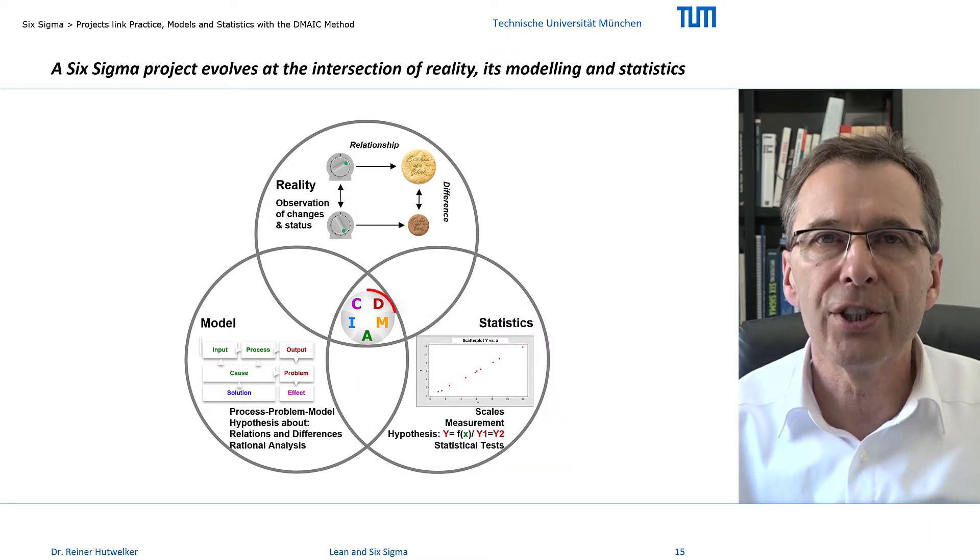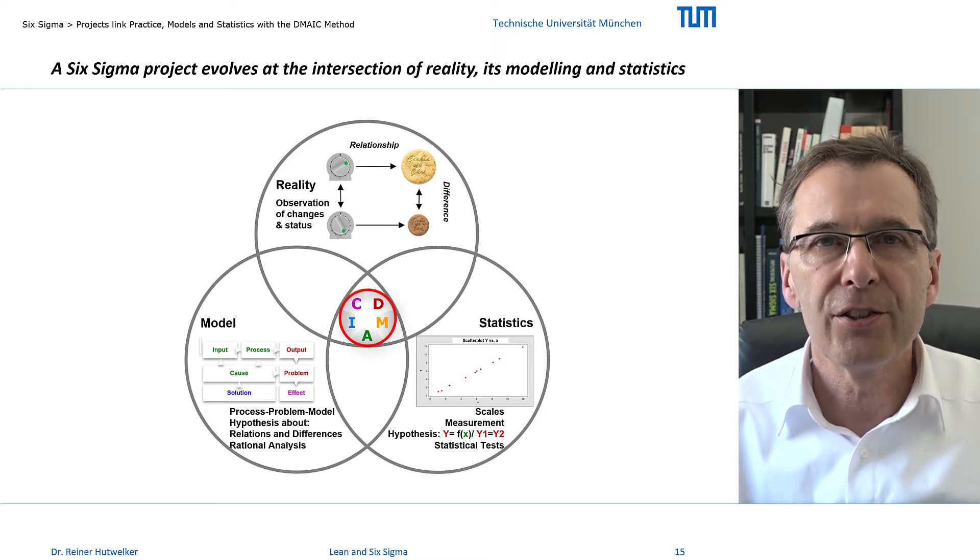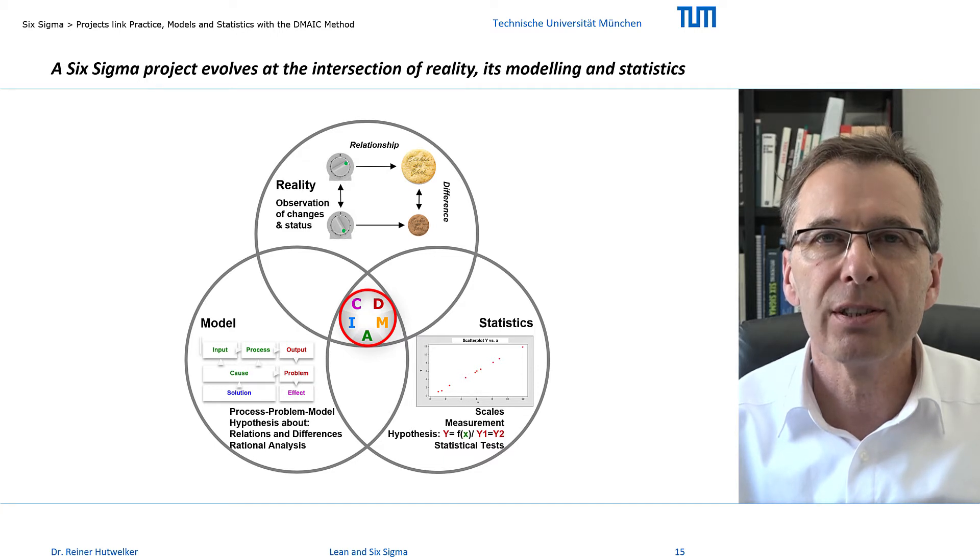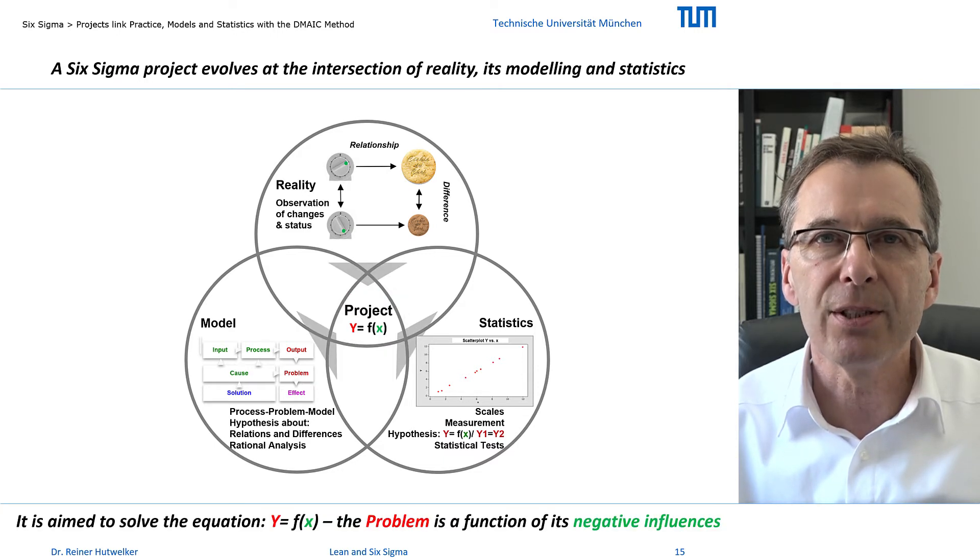The chronology of steps we take in our project is determined by the DMAIC. This is a generic scientific approach, and this approach is aimed at solving the central function of Six Sigma: Y is a function of X.